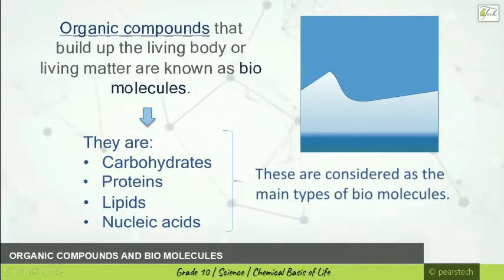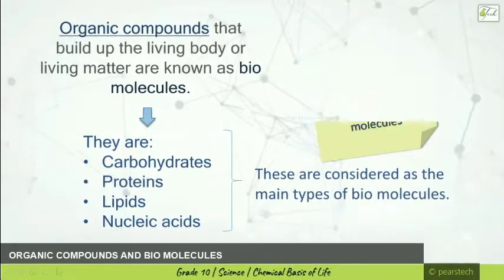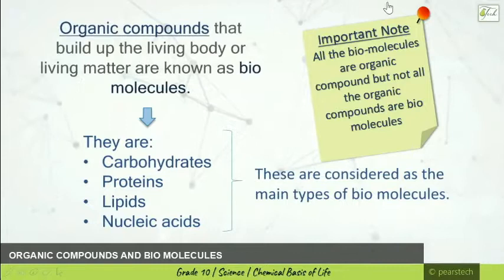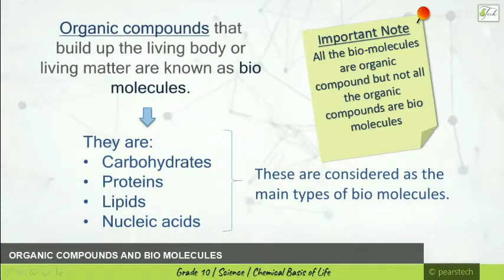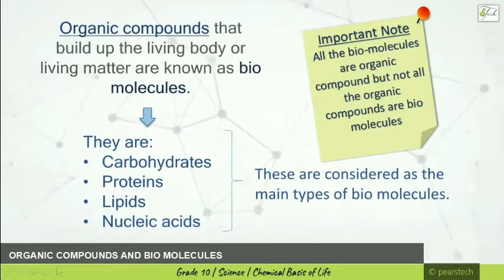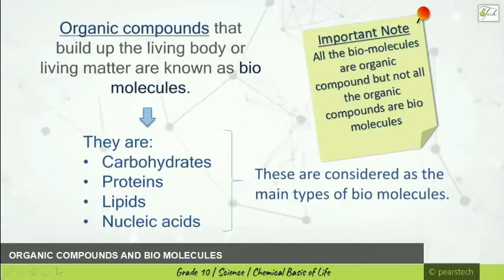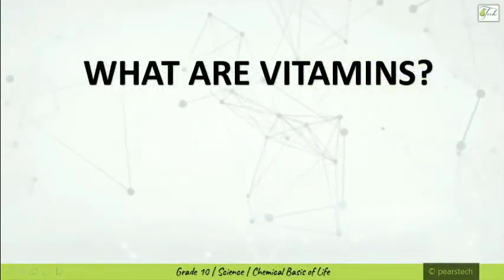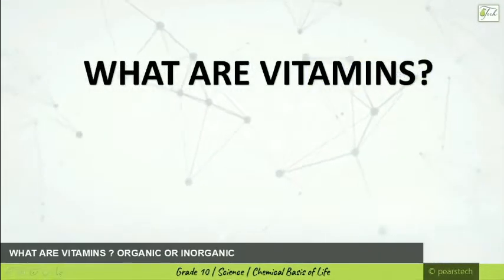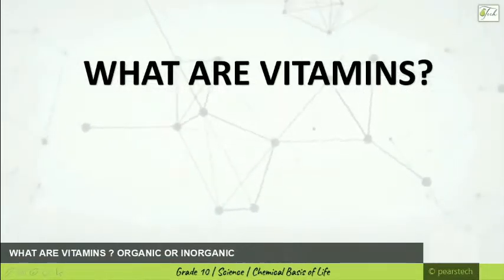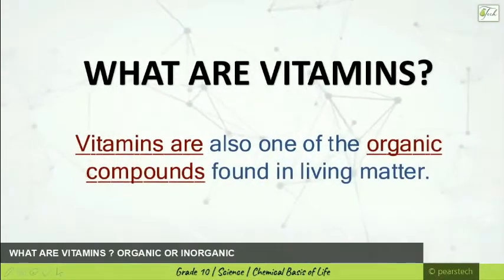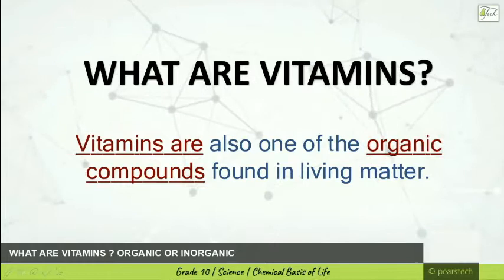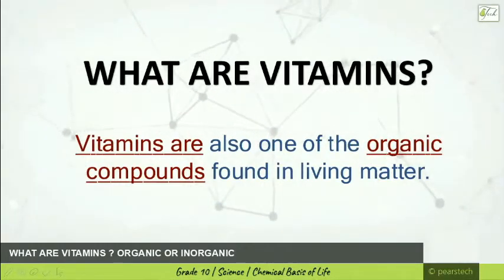The main types of biomolecules the human body has are: carbohydrates, proteins, lipids, and nucleic acids. The important note here is that all biomolecules are organic compounds, but not all organic compounds are biomolecules. Everything we call a biomolecule is going to be an organic compound, but not every organic compound is a biomolecule. For example, vitamins are also organic compounds found in living matter, just like carbohydrates.